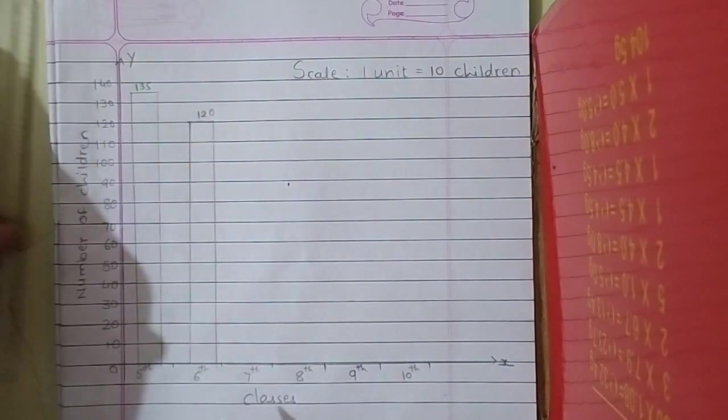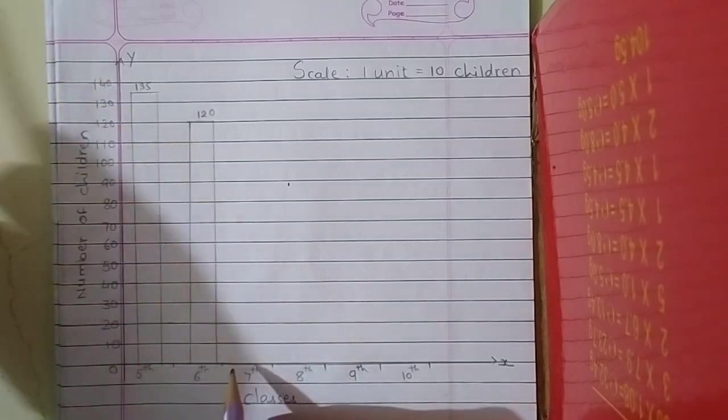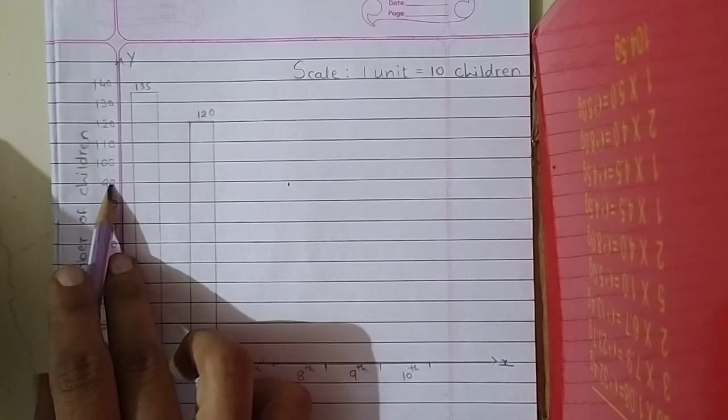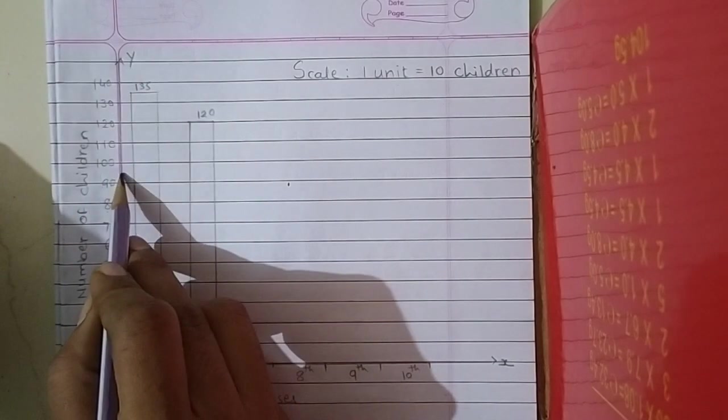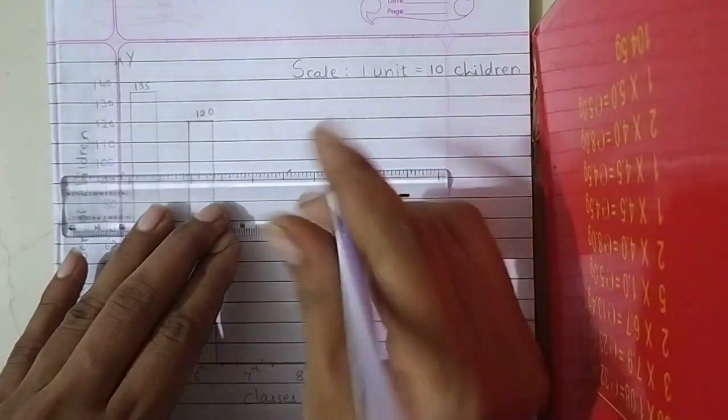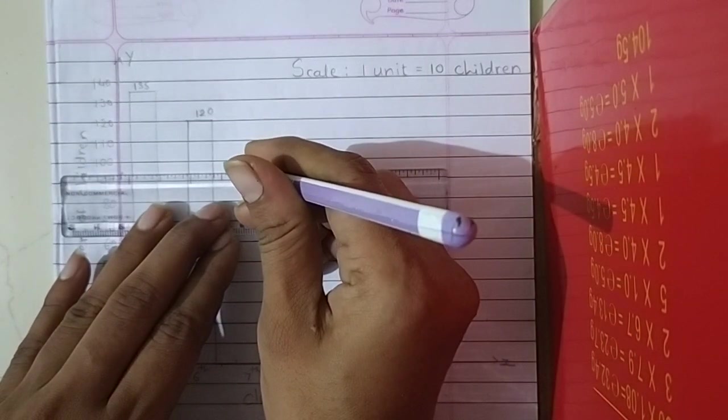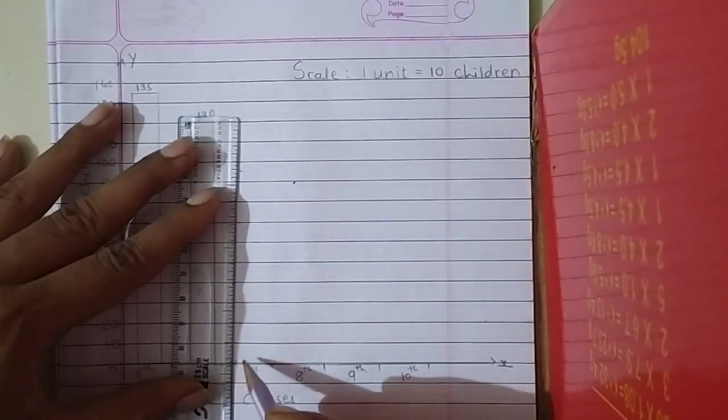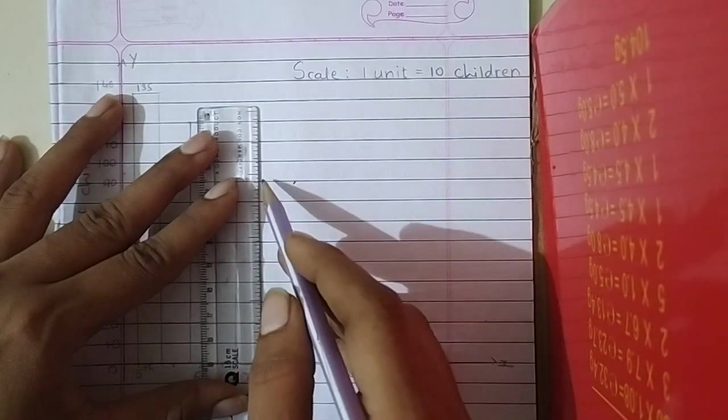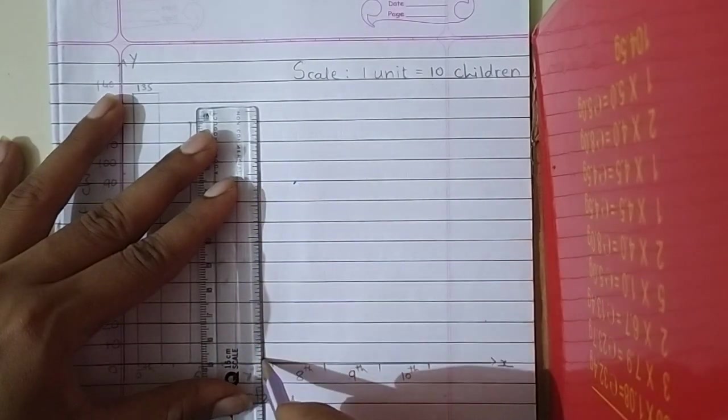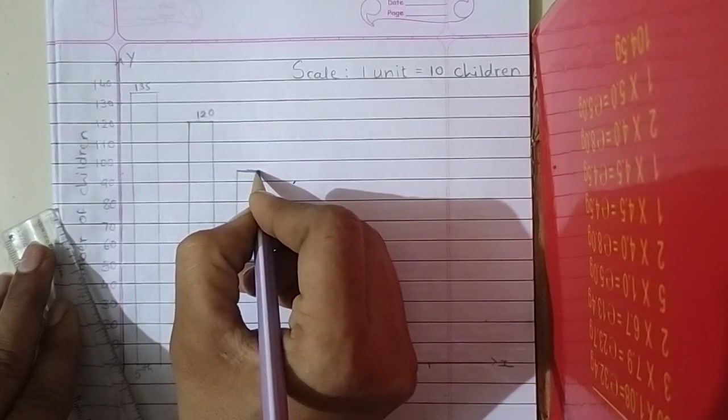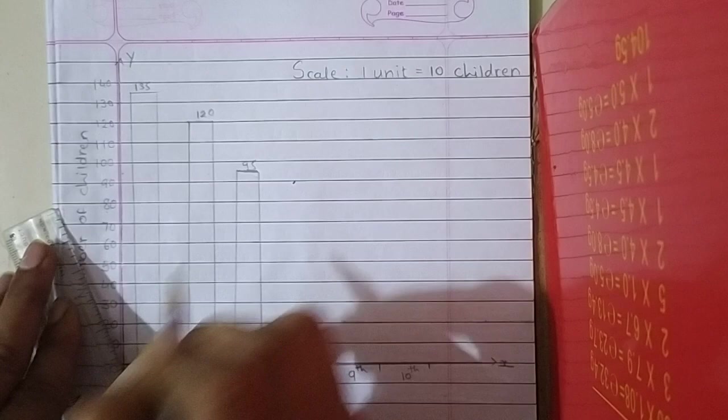Now next, 7th class, 95. 95 comes between 90 and 100. So here mark out. 95. Okay students.